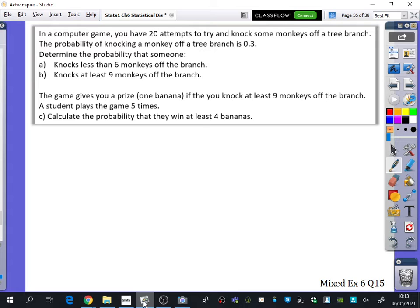It says here that in a computer game, you have 20 attempts to try and knock some monkeys off a tree branch. The probability of knocking a monkey off a tree branch is 0.3. First of all, it wants us to determine the probability that someone knocks less than 6 monkeys off the branch and knocks at least 9 monkeys off the branch.